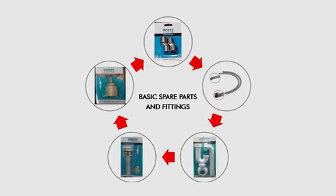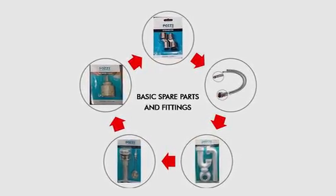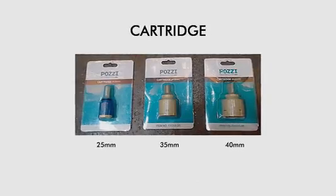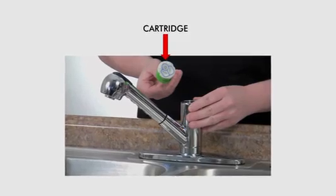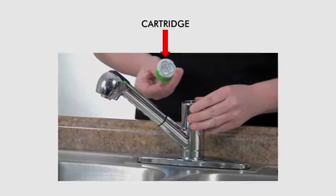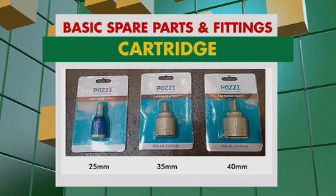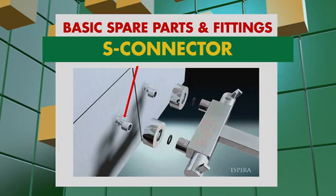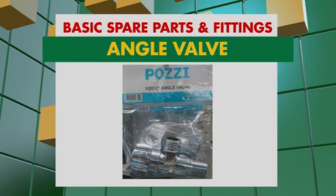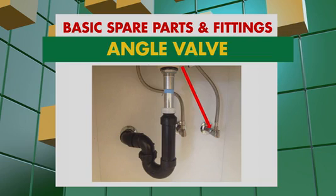Ang mga basic spare parts and fitting sa plumbing ay ang mga sumusunod. Cartridge — ang cartridge ay spare parts ng mga regular laboratory and kitchen faucets ng Posee at Cash, at ito ay available sa 25mm, 35mm, at 40mm diameter. S-connector — ang S-connector naman ay spare parts ng mga exposed type shower faucets. Angle valve — ang angle valve naman ay ginagamit na connector mula sa water supply papunta sa faucet.